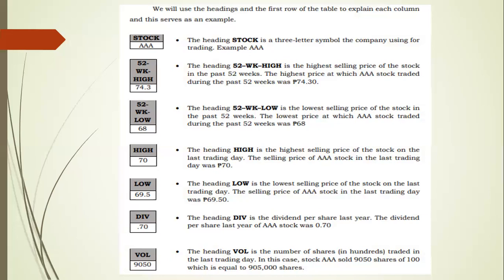The heading 'DIV' is the dividend per share last year. For AAA stock, the dividend per share last year was 0.70. The heading 'VOL' is the number of shares in hundreds traded on the last trading day. AAA stock sold 9,050 hundreds of shares, which is equal to 905,000 shares.